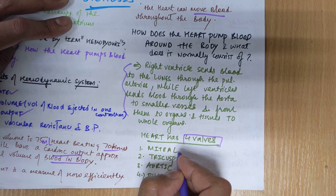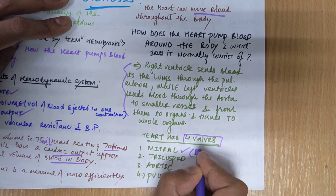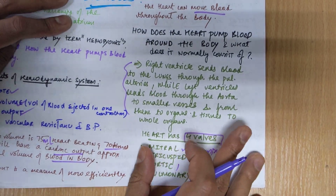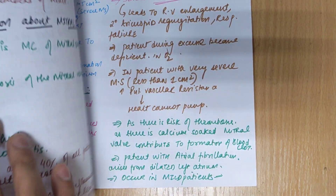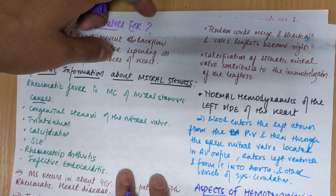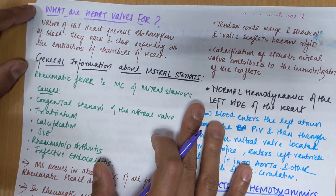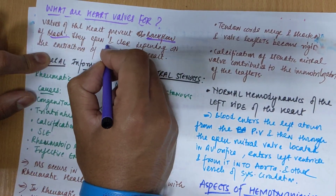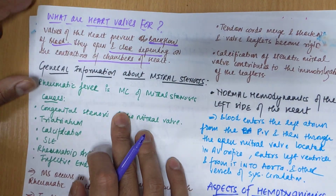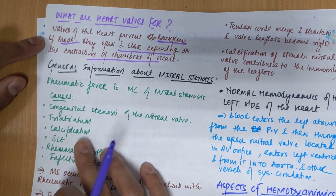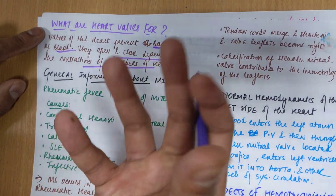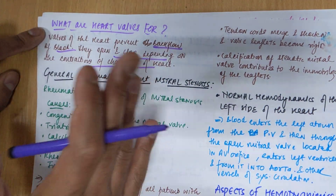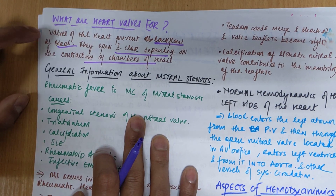In the heart we have four valves: the mitral valve — also called the bicuspid valve — the tricuspid valve, the aortic valve, and the pulmonary valve. The valves of the heart prevent backflow of blood and they open and close depending on the contraction of the chambers.